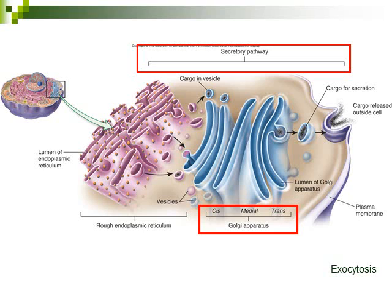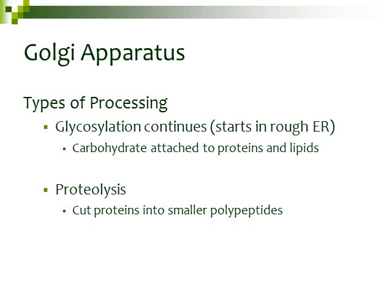That vesicle can also become another structure. This whole pathway — starting with the rough ER creating the protein and moving that protein through the Golgi apparatus — is called the secretory pathway. As your protein goes through the Golgi apparatus, processing can include glycosylation, where a carbohydrate attaches to your protein or to a lipid. The other type of processing, where you cut the protein into smaller parts, is called proteolysis — proteo referring to protein, lysis meaning to cut up into smaller pieces.